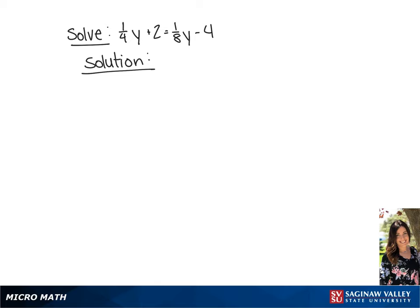We have the equation 1/4 y plus 2 equals 1/8 y minus 4. We're going to start by clearing the fractions by multiplying each side by 8.